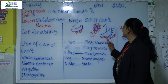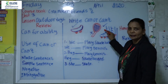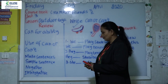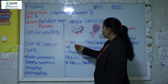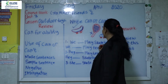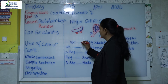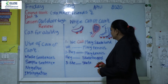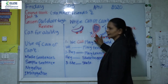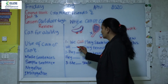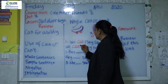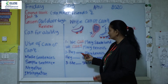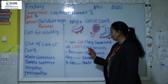There is a tick for skating, so we use 'can'. For example: 'We can play skateboard.' And for tennis there is a cross, so we use 'can't' — because we don't have the ability to play tennis. So: 'We can't play tennis.'